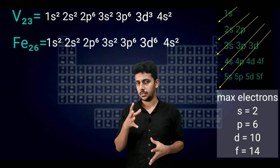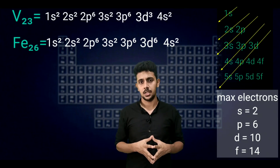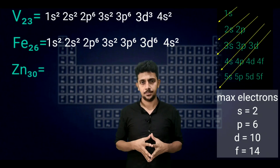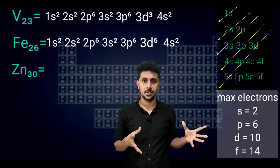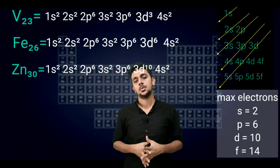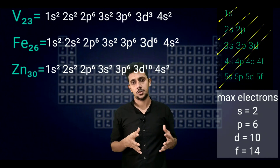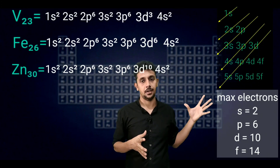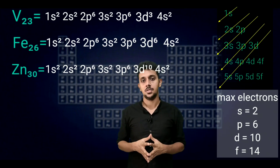Last one — a very important example. That is zinc, atomic number 30. See the configuration: 1s2, 2s2, 2p6, 3s2, 3p6, 4s2, 3d10. This is the configuration of zinc.